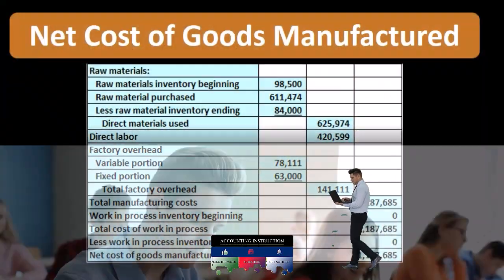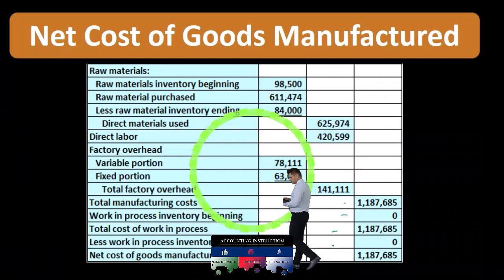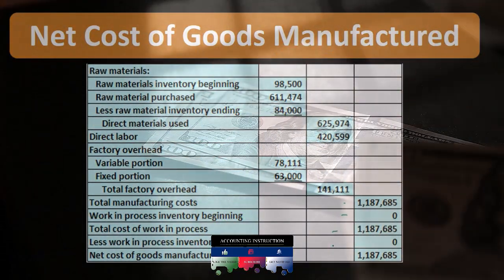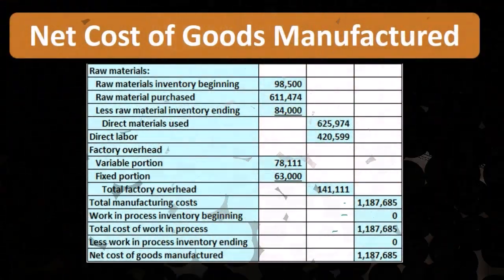That net cost of goods manufactured is then the major component in the calculation of cost of goods sold.